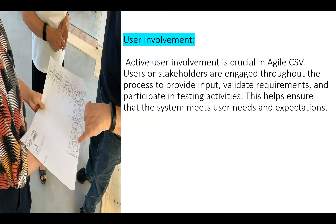The third key point is user involvement. As we discussed, we have the cross-functional team, and the involvement of users is a necessary key point because users know what they need. User expectations as per the regulatory requirement is the main goal of any CSV process. User stakeholders are engaged throughout the process to provide input, validate requirements, and participate in testing activities.